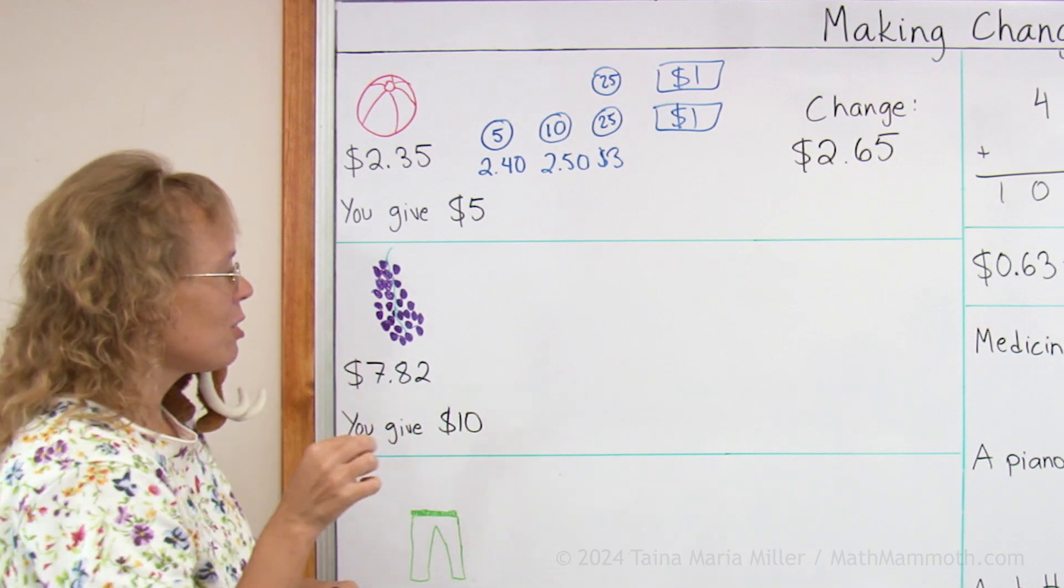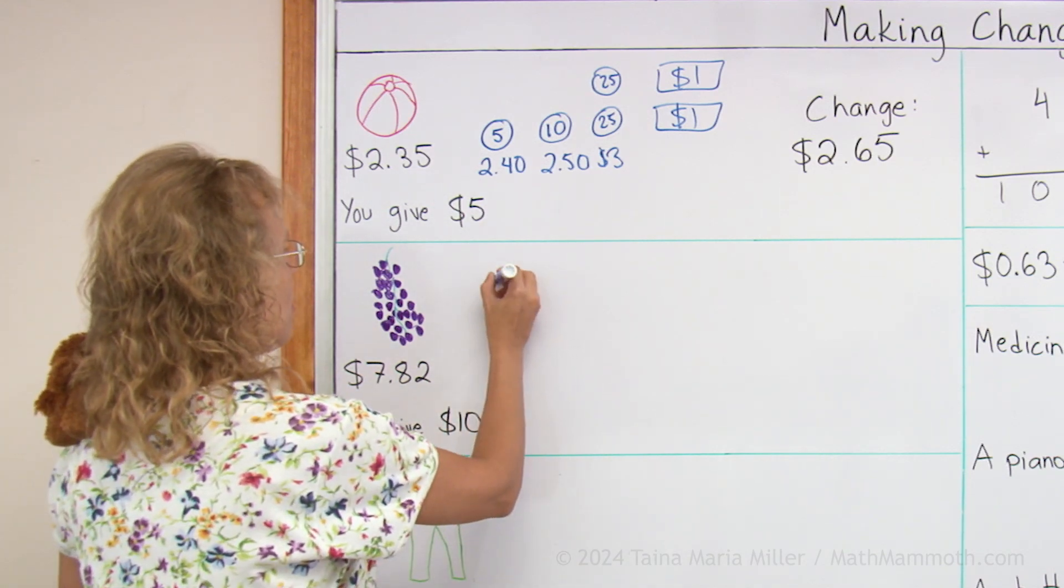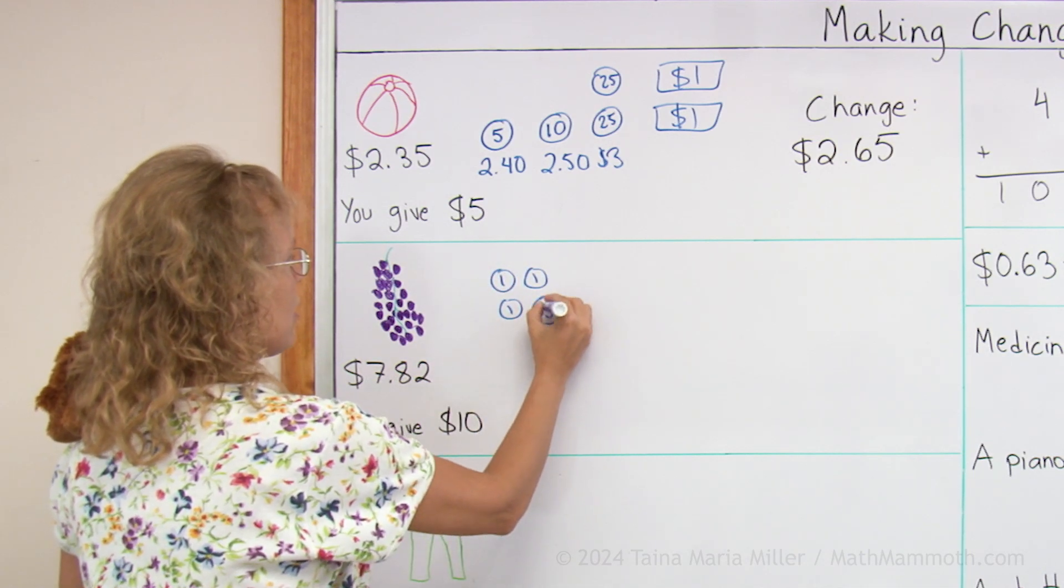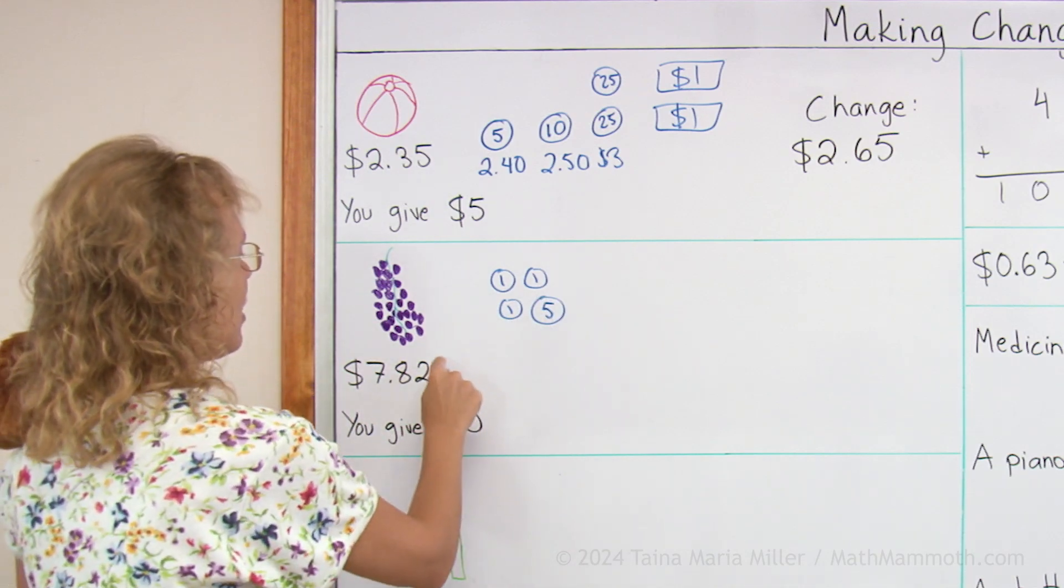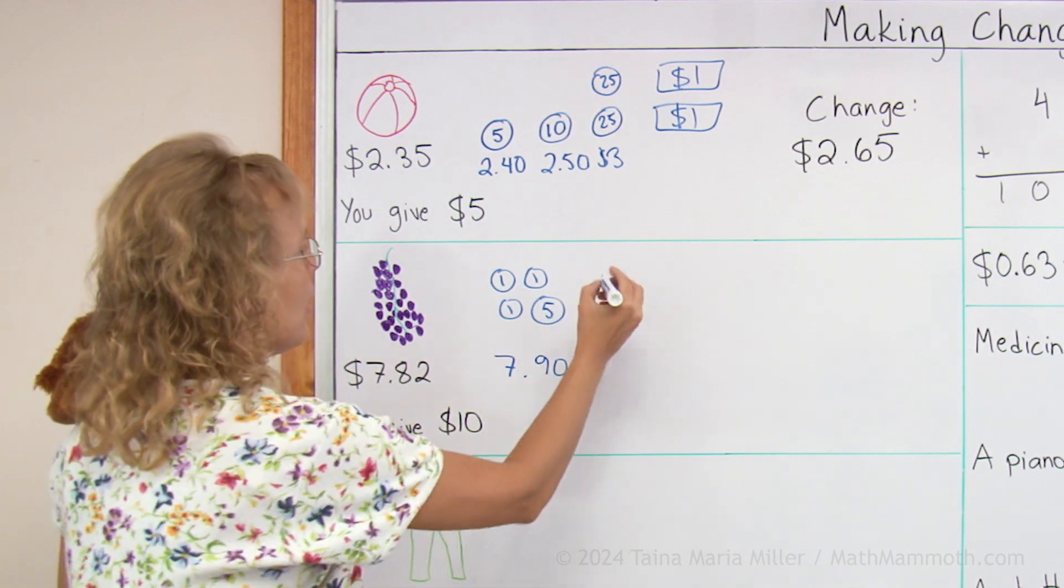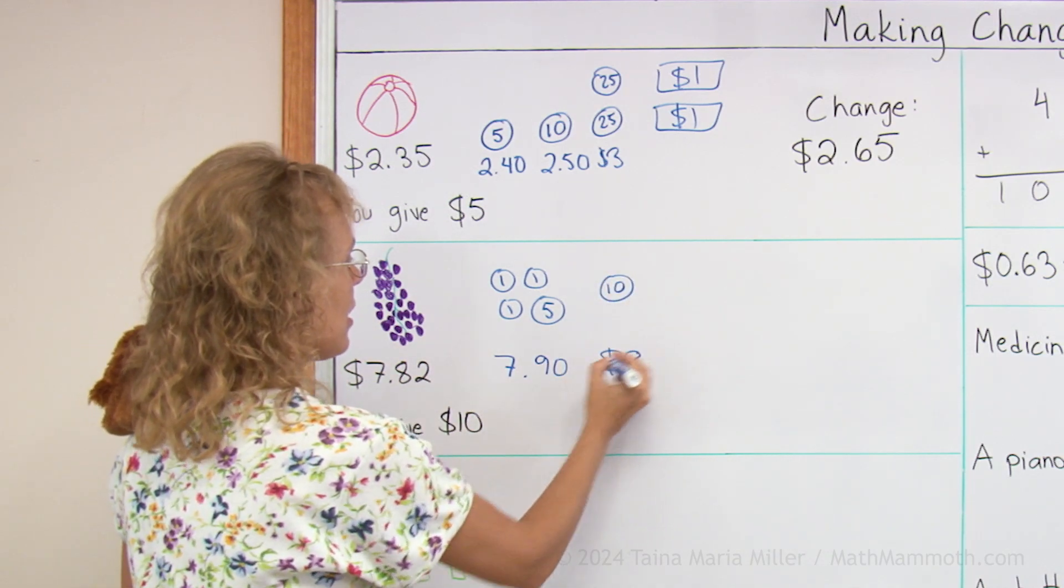So I will first draw coins to go to $7.90. I would draw 8 cents. Here's 8 cents. And after adding this and this, I would have $7.90. And then I add 10 cents and after that, I would have exactly $8.00.